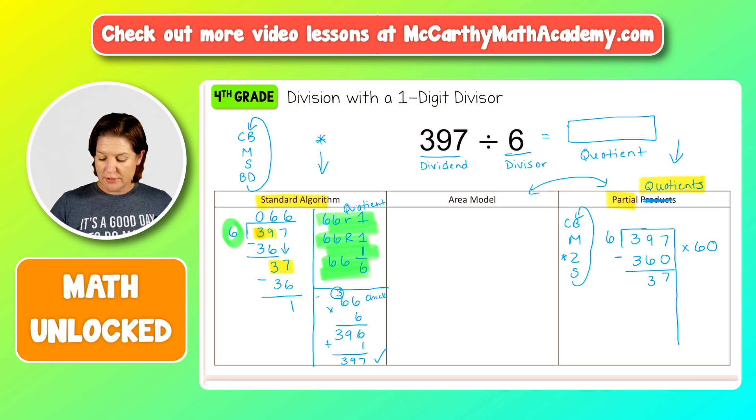Now I subtract and that would be 37 remaining. Now, same thing. I repeat because 37, there's still groups of six that we can take out. So count by sixes till we get to 37, 6, 12 and 18, 24 and 30, 36. Okay. That was six times. That was the multiplication step. Now I don't have any zeros to plug in there. So I'm just going to subtract and that would be one leftover.